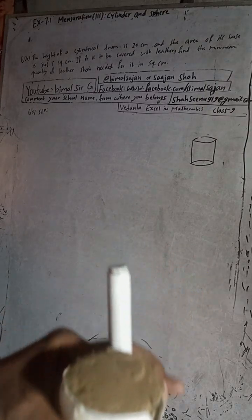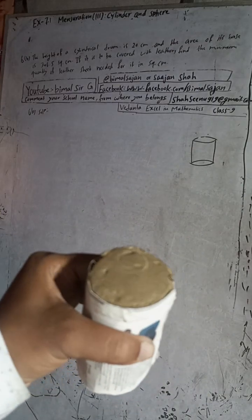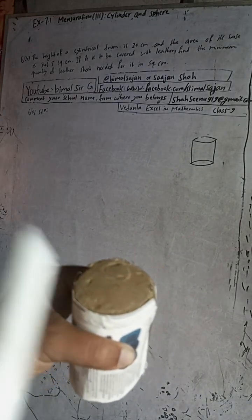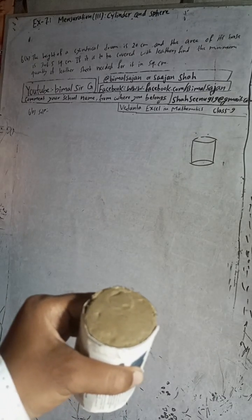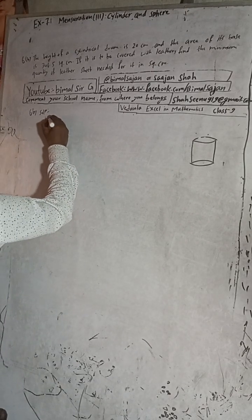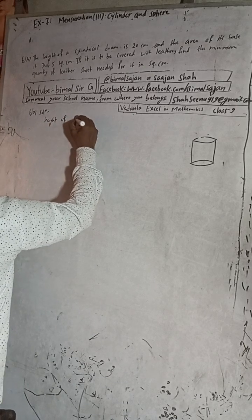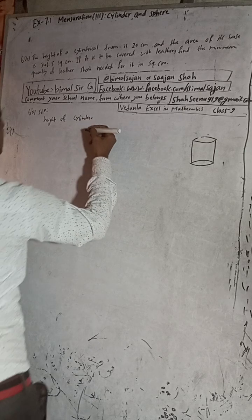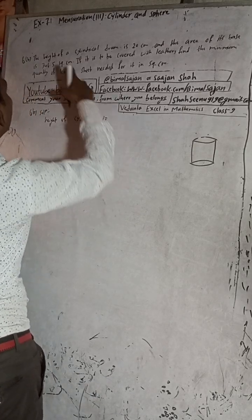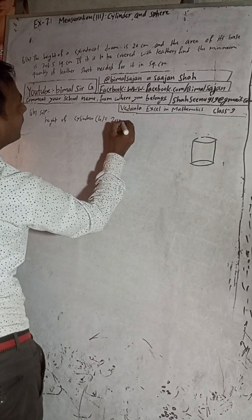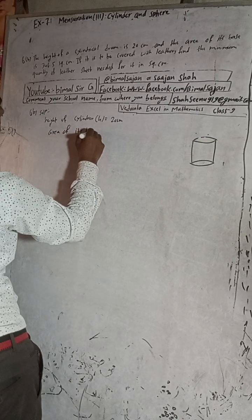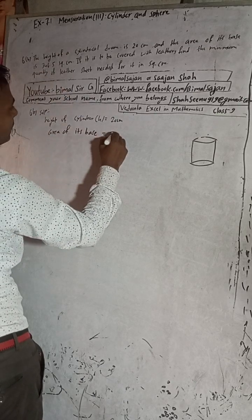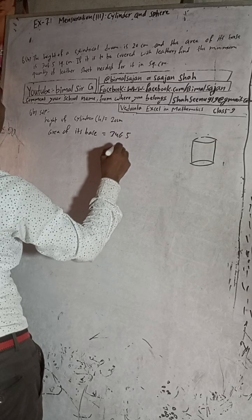Suppose this is our cylindrical drum. The height is given as 20 cm, so this height is 20 cm, and area of this base is given as 346.5 square cm. Now, the height of the cylinder or cylindrical drum is equal to 20 cm, and area of its base is equal to 346.5 square cm.